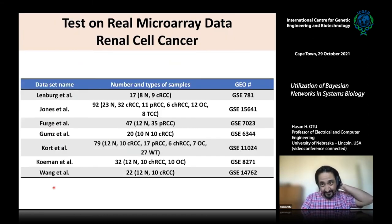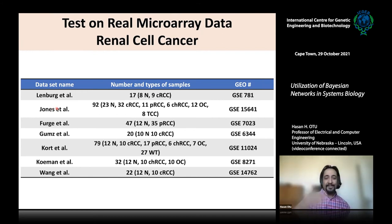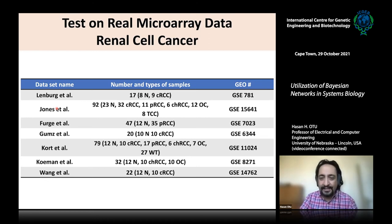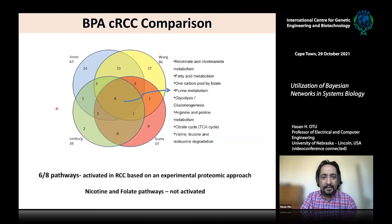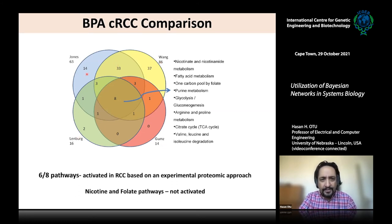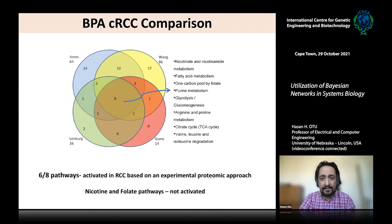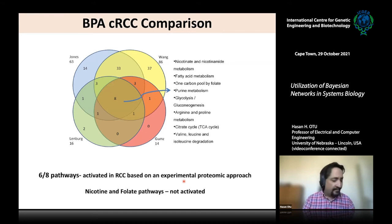We also applied BPA to real RCC renal cell carcinoma data sets. We took overlapping pathways that BPA called active across four clear-cell RCC data sets. At the intersection of all four data sets, there were eight pathways, and six of those eight were experimentally validated as activated in RCC. This gave us confidence that we can identify active pathways from real data.